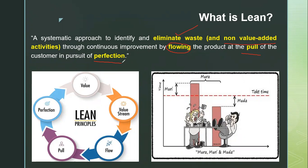In lean, we pull when and as the customer needs it — and 'customer' includes both external and internal customers. The lean methodology is implemented through five principles: Value, Value Stream, Flow, Pull, and Perfection. Six Sigma is implemented under DMAIC, which will be discussed when comparing the differences between these methodologies.